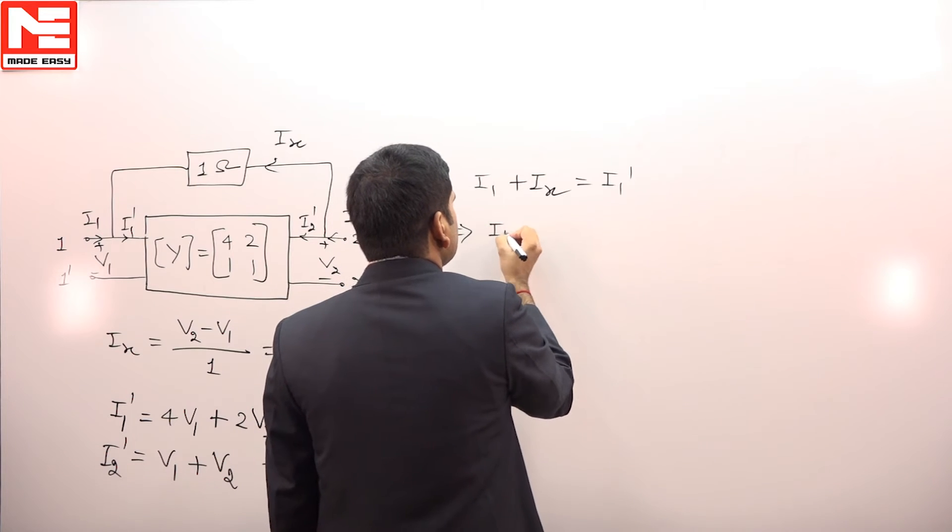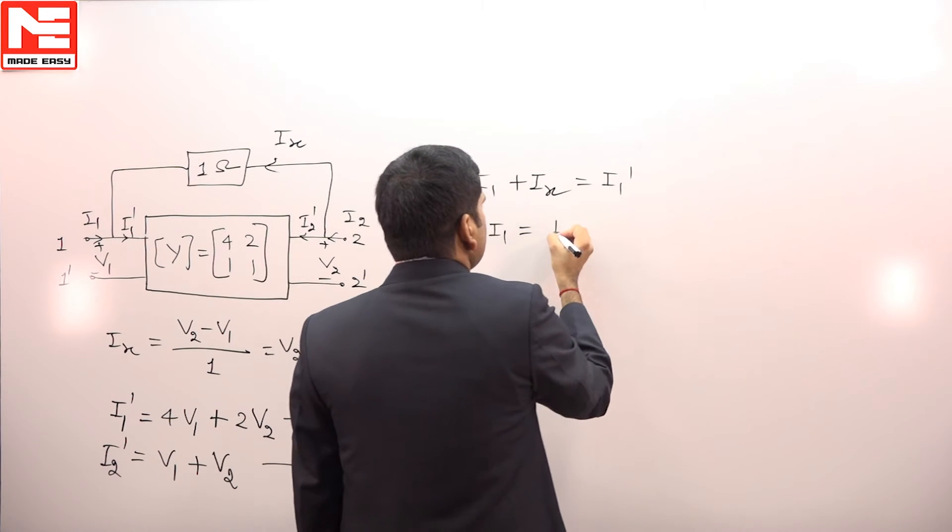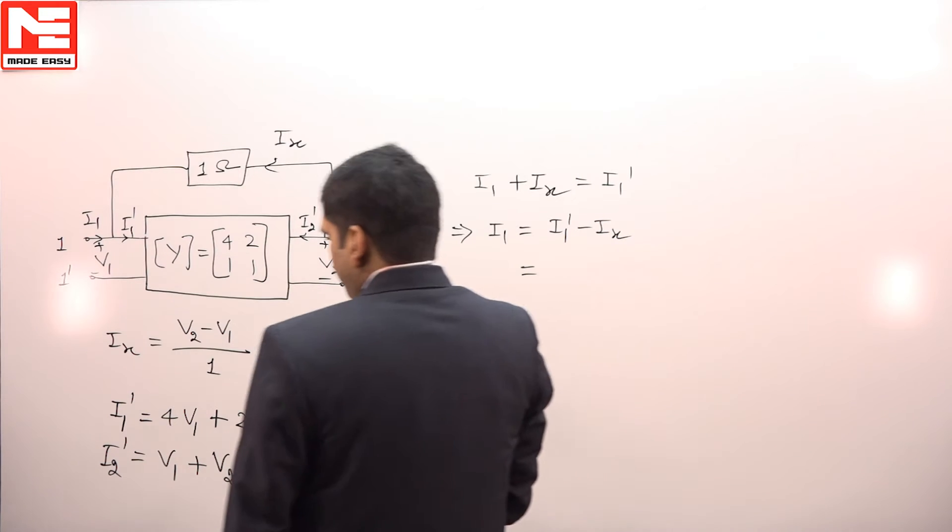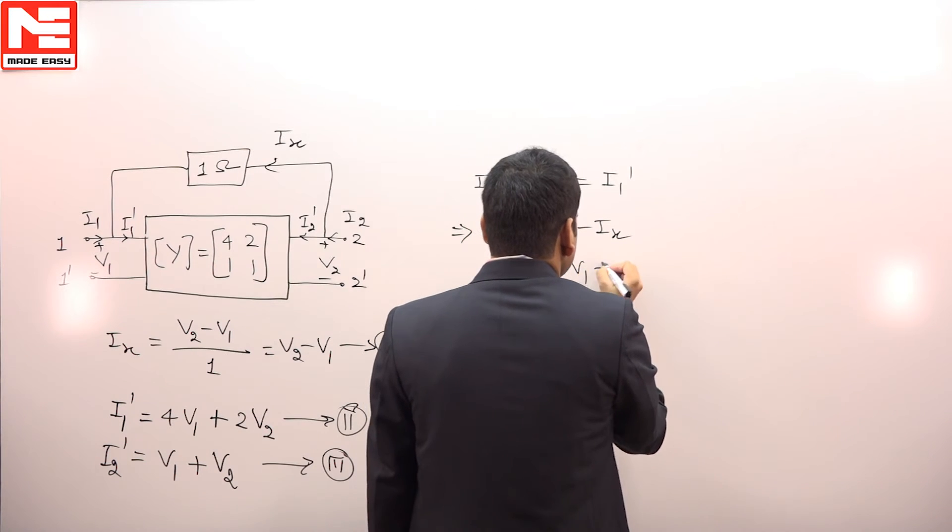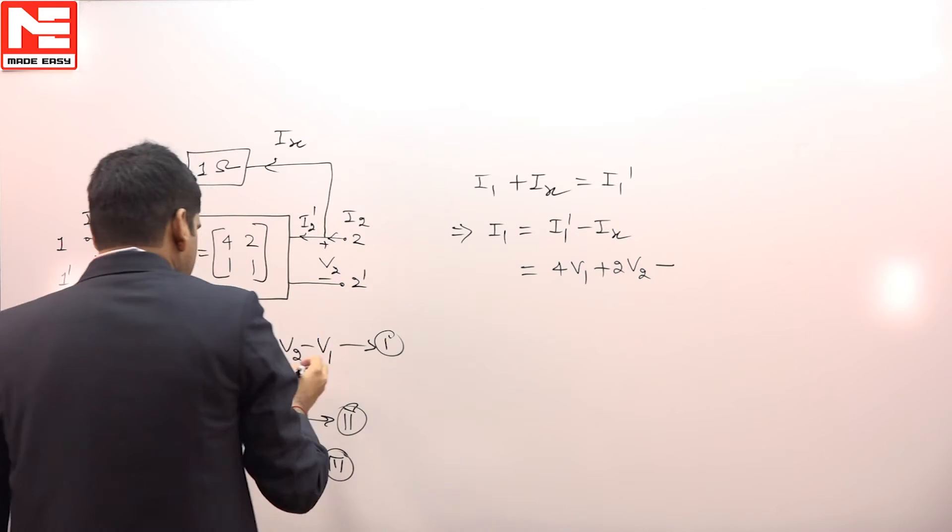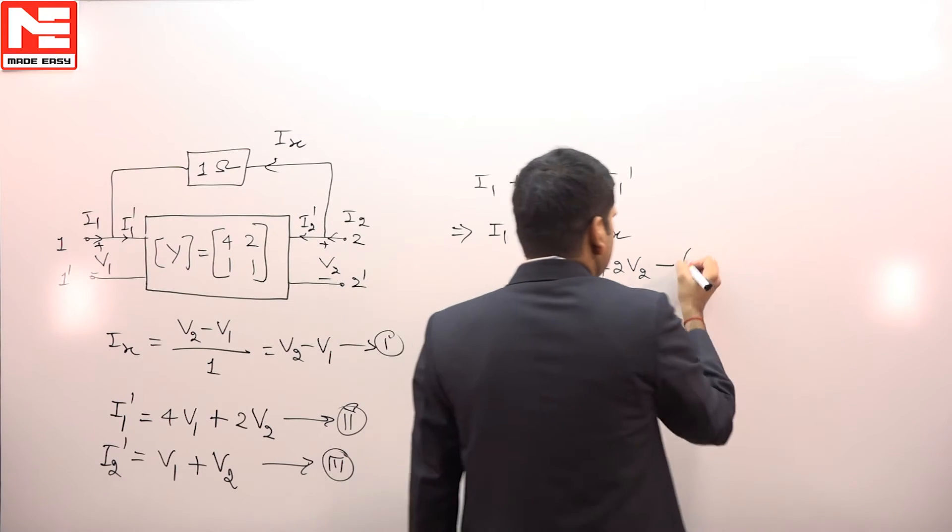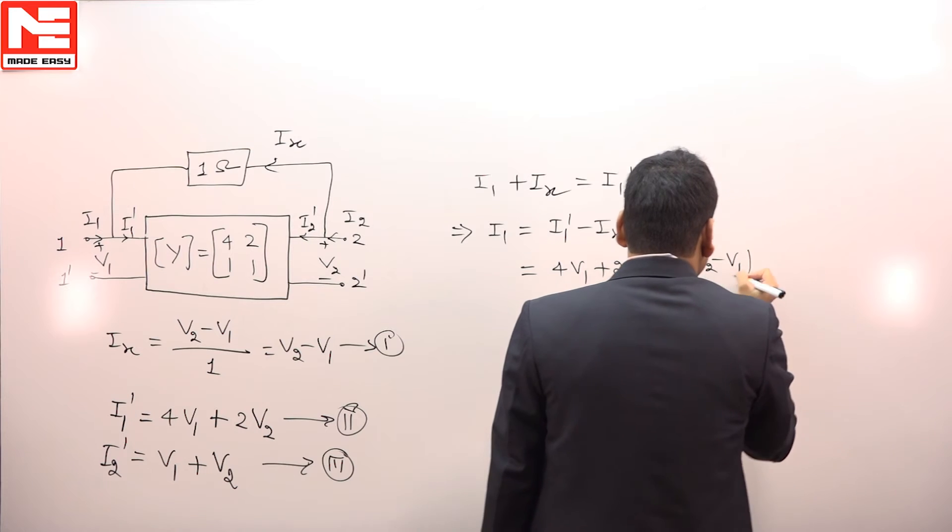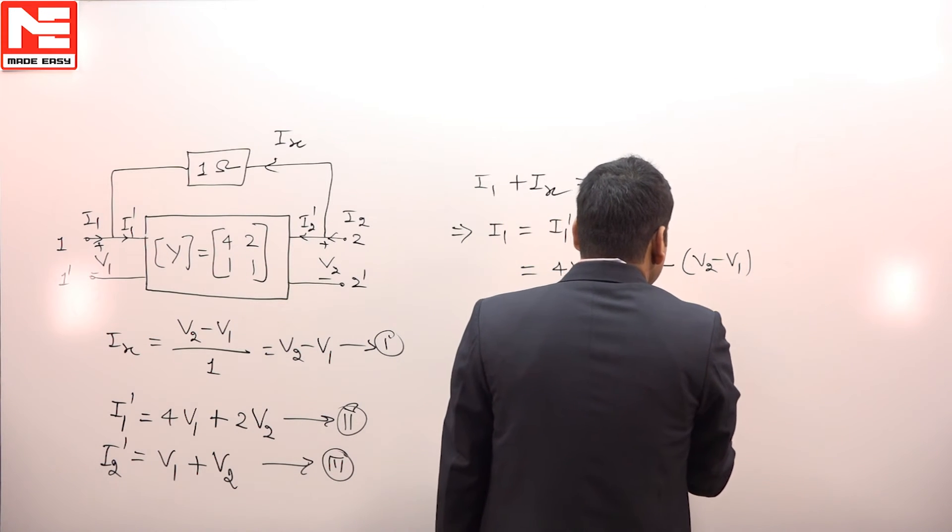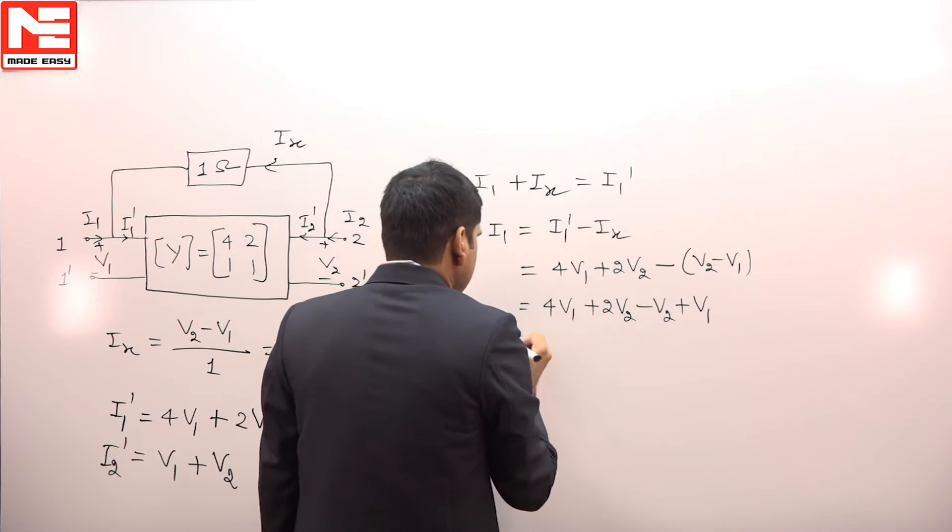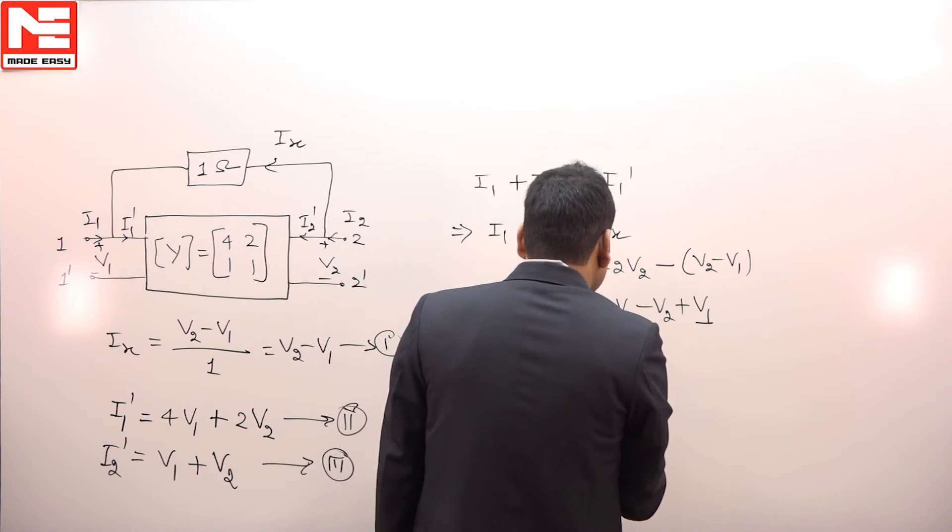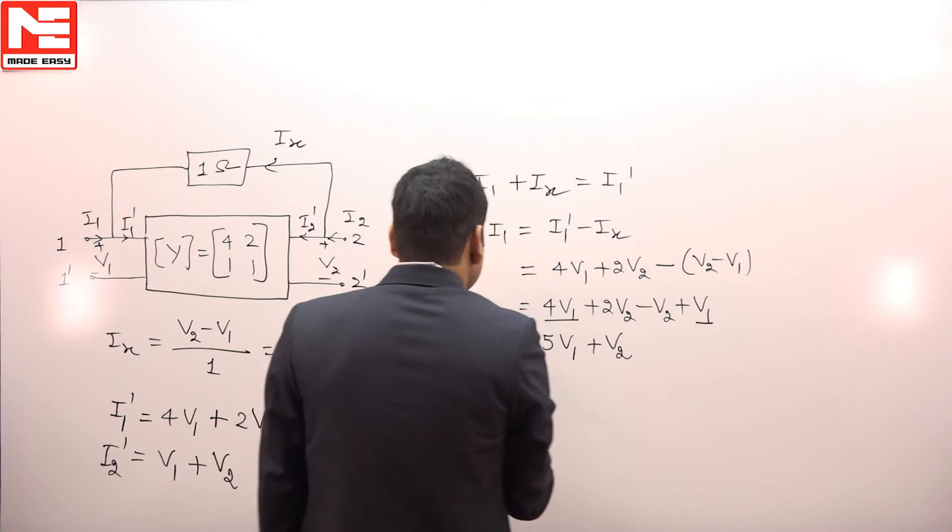i1 dash is equal to 4V1 plus 2V2 and minus ix. ix is equal to V2 minus V1, so 4V1 plus 2V2 minus V2 plus V1. This equals 4 plus 1, 5V1 plus V2. This is i1, equation number 4.